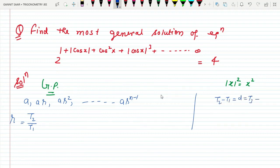In AP, there's common difference. In GP, there's common ratio - meaning second by first, third by second. If these are all equal, then it's a GP, and we need the sum of infinite terms of GP.